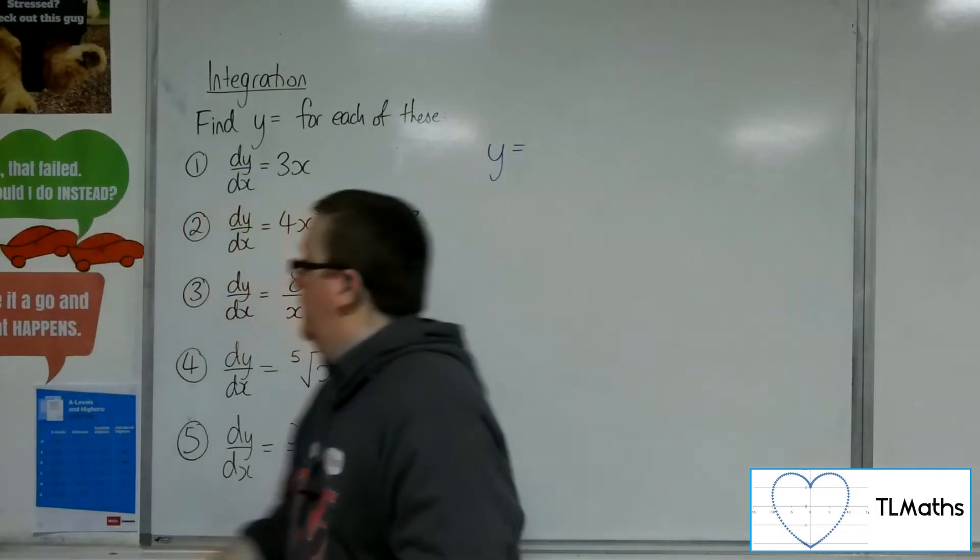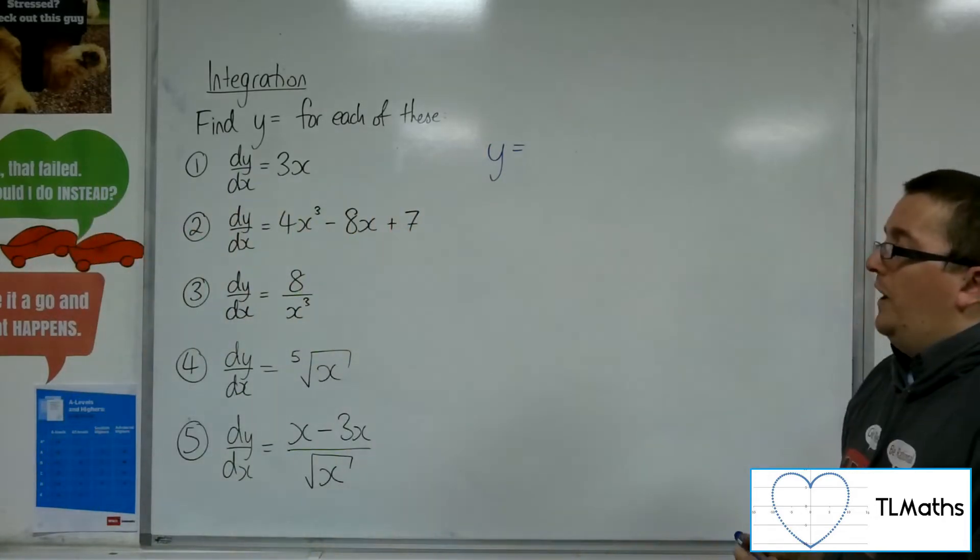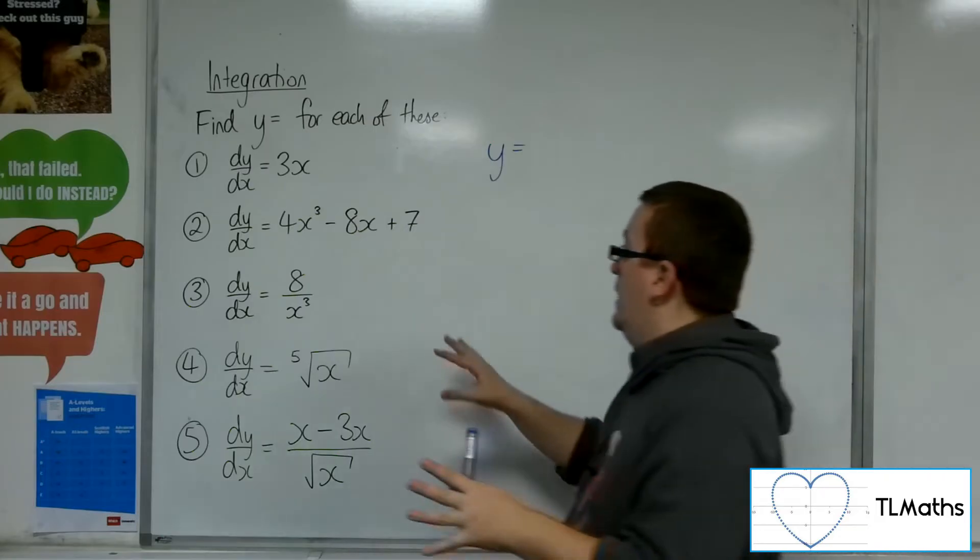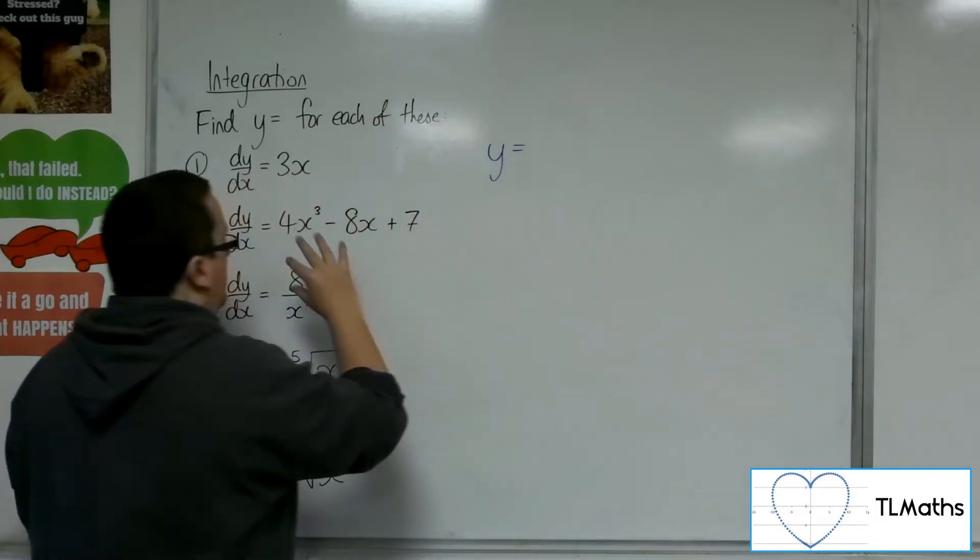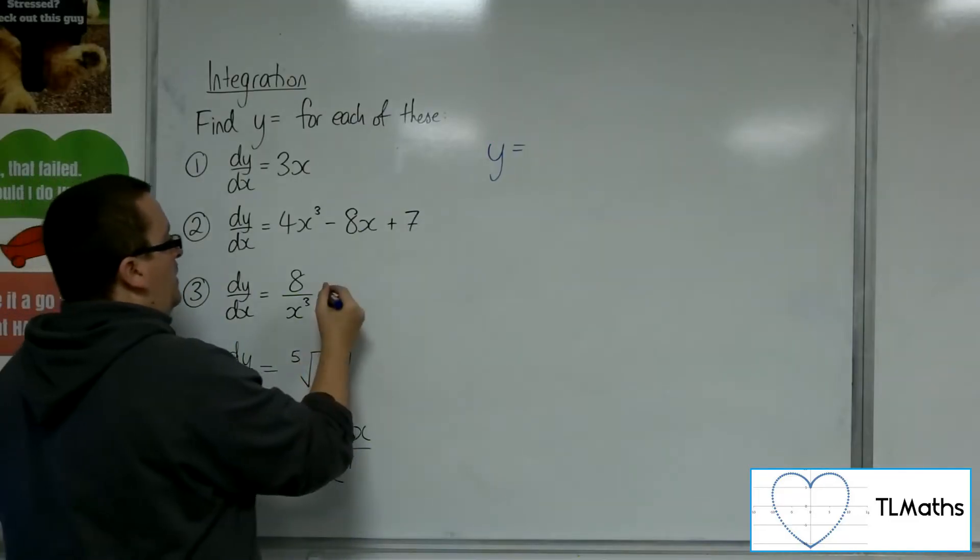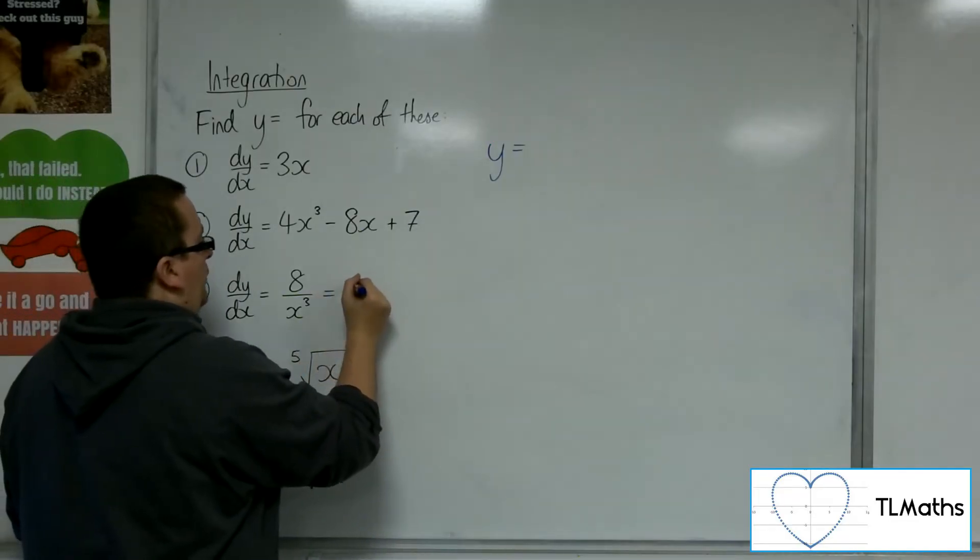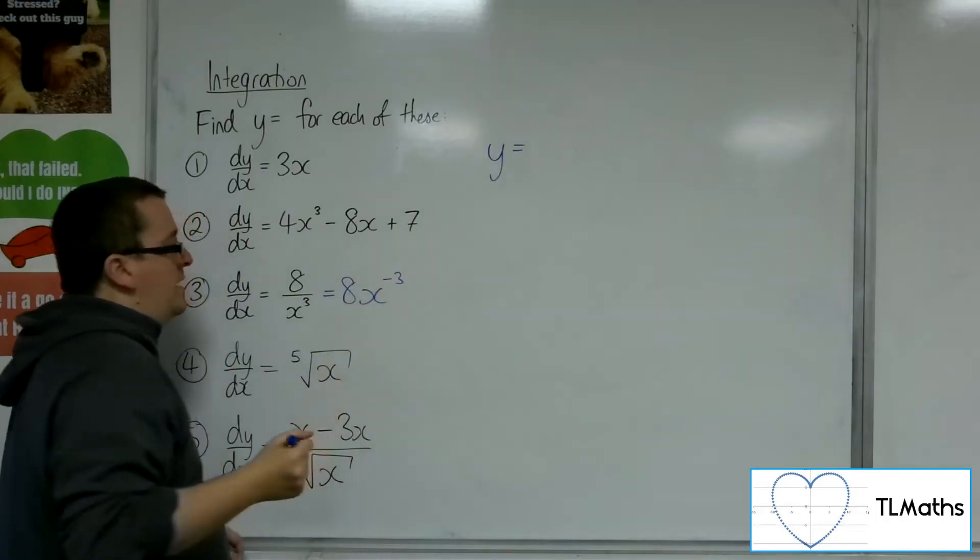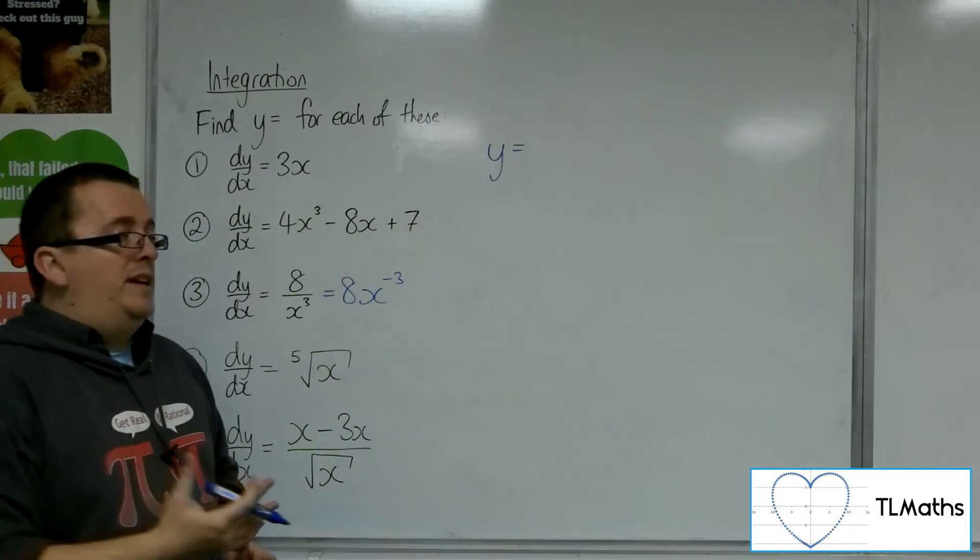Number 3, dy by dx equals 8 over x cubed. Now, before we want to integrate, we want to get this into a format that we can integrate into the format ax to the n. So, I'm going to rewrite that as 8 lots of 1 over x cubed, so 8 lots of x to the minus 3. I'm now ready to integrate.